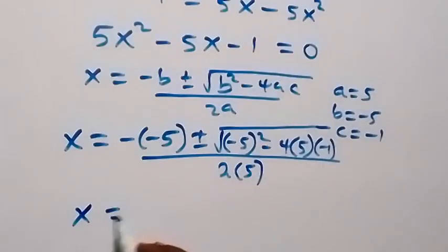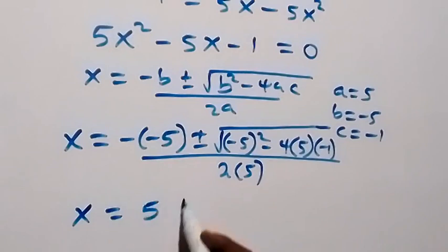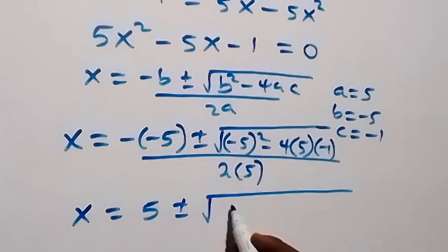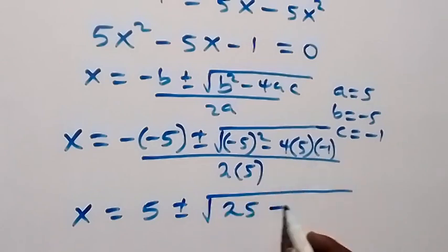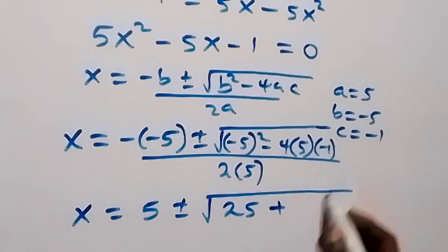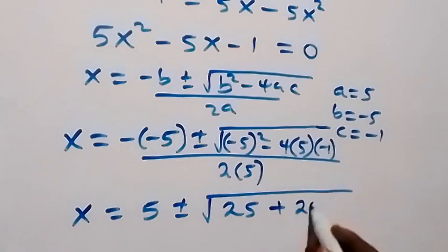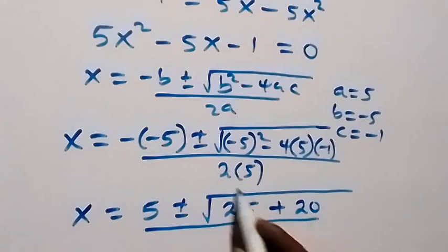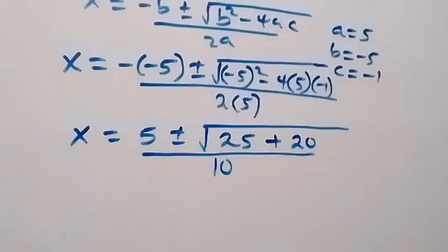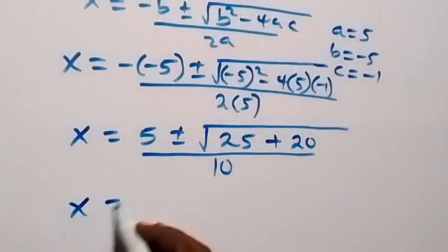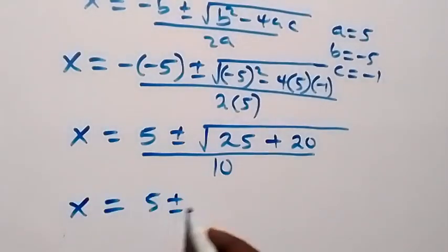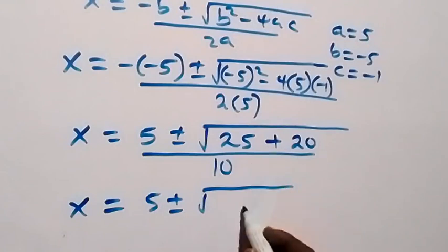When we solve further, this gives us x equals to 5, plus or minus square root of: minus 5 squared gives 25, then minus times minus gives plus, so 4 times 5 times 1 is 20. All over 2 times 5, which is 10. So x equals to 5 plus or minus square root of 25 plus 20, that's 45, over 10.